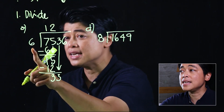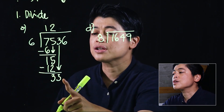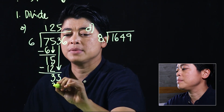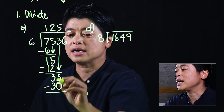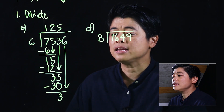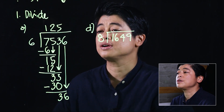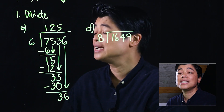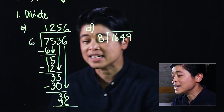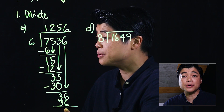So now we divide 33 by 6 — the easiest way is to count by 6 until you reach 33 without going over, which is 5. That gives us 30, then we subtract to get 3. Bring down again to make 36. Divide: 36 divided by 6 is 6, giving us 36. We subtract and get zero, ending the process with no remainder.